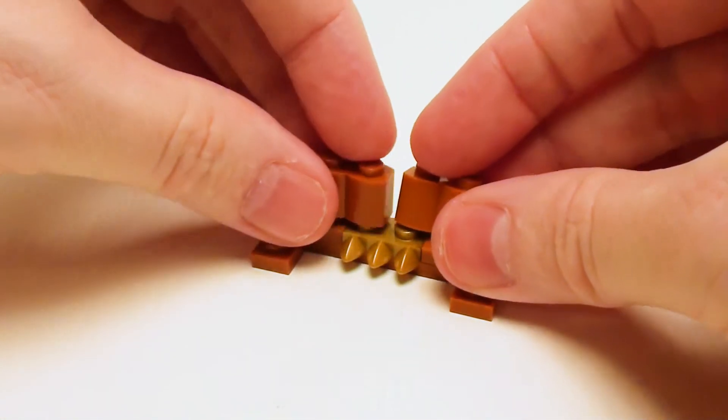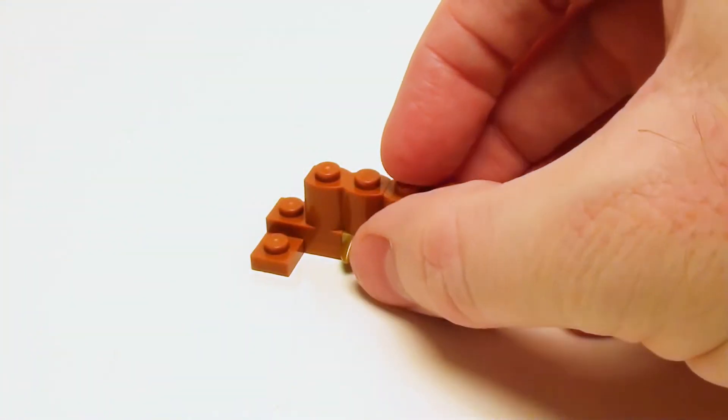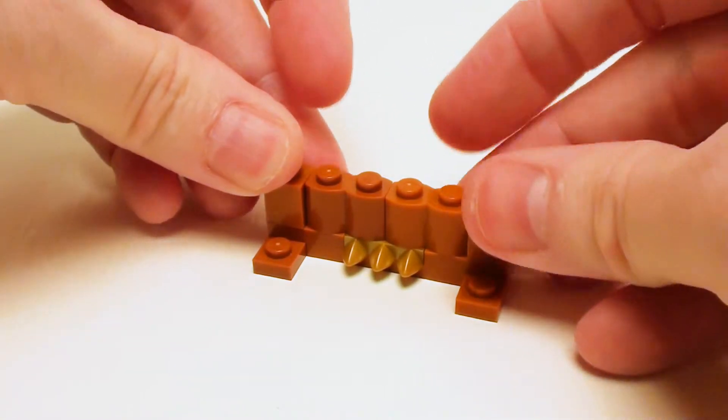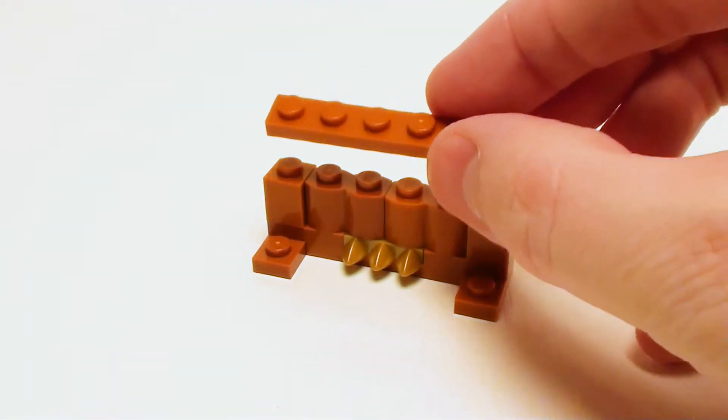Now in the middle, a pair of 1 by 2 palisade bricks. And we're going to finish this off with a pair of 1 by 1 bricks. Now in the back,